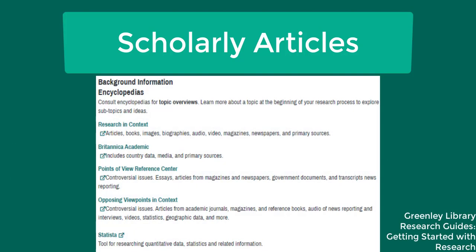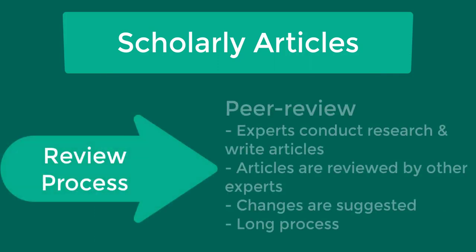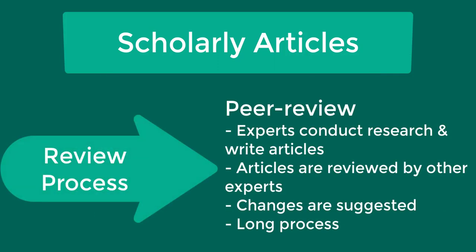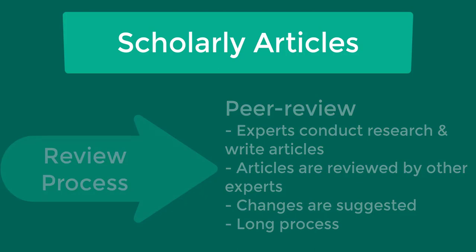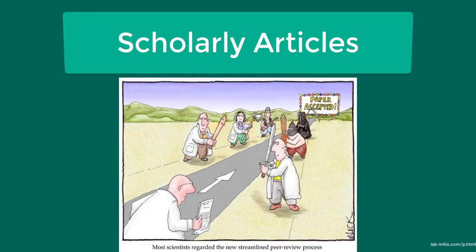If you're interested in a broad topic overview, you might refer to encyclopedia articles instead. The review process for these articles is called peer review. In order to be published, authors submit articles to journals to be reviewed. Articles are carefully reviewed by other experts in that particular field. The reviewing experts may suggest changes and recommend to the editor of the journal whether or not to publish the article. This process can be time-consuming, and it may take months for an article to be published.